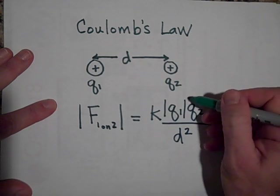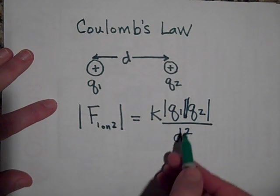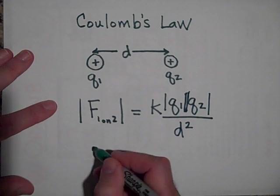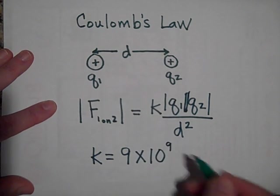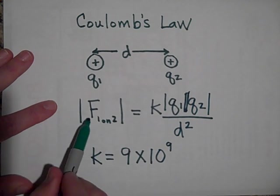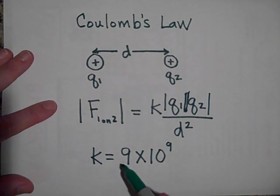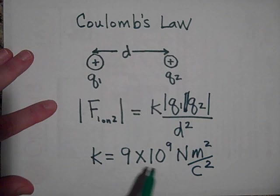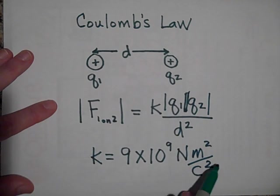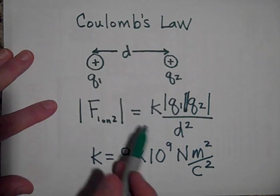all over D squared. Now, K is a constant, you might want to write this down. It's about 9 times 10 to the 9th. And let's see what the units would have to be. I have to end up with force, Newtons. And so this is Coulombs, Coulombs, and meters squared. So K better be Newtons meters squared over Coulombs squared. See if that works out. When we take K, which is this, see if these units, when you multiply them by Q1 and Q2, that would cancel these out, divided by the distance squared, that would cancel the meters squared. And sure enough, you're left with Newton. So yeah, that works.